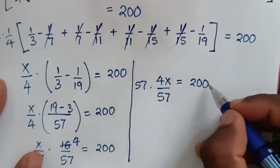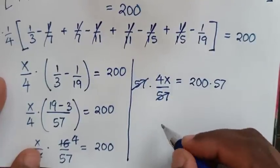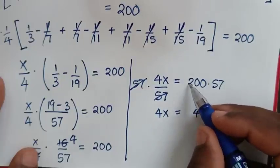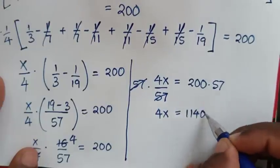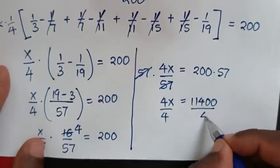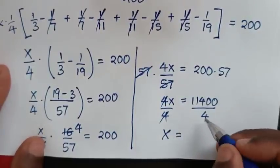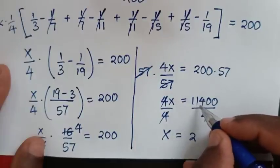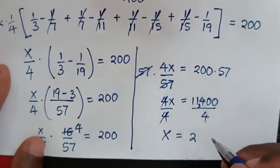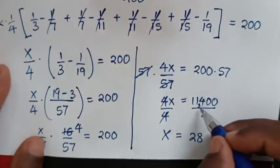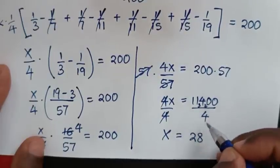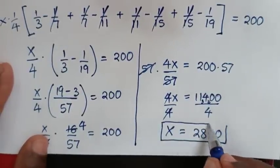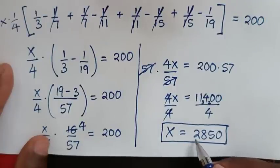Multiply both sides by 57: 4x equals 200 times 57 equals 11400. Divide both sides by 4: x equals 11400 divided by 4 equals 2850. So the final answer for x is 2850.